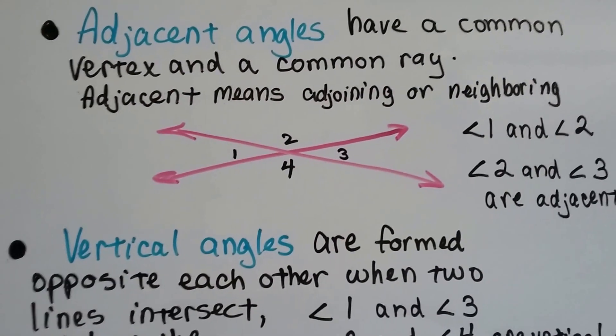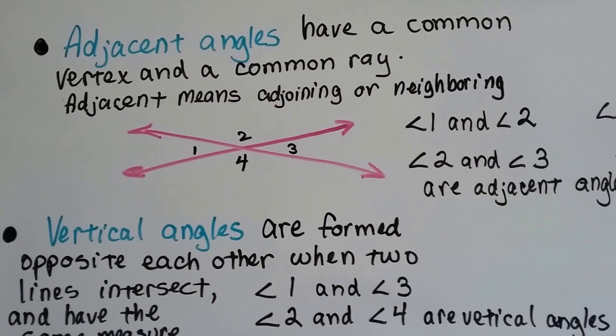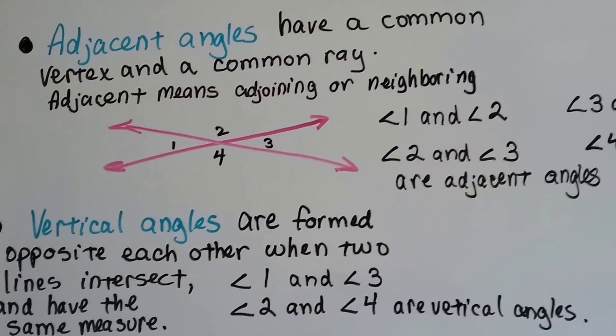As we said in the previous video, adjacent angles have a common vertex and a common ray. Adjacent means adjoining or neighboring.